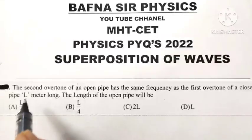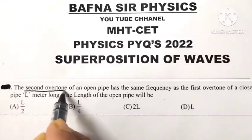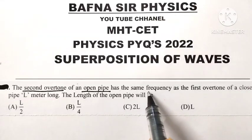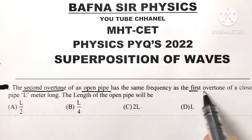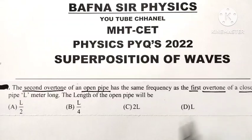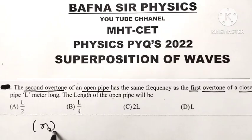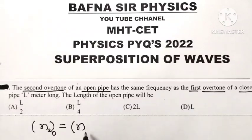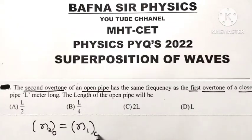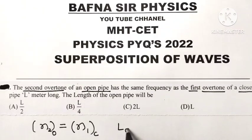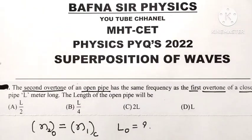The second overtone of an open pipe has the same frequency as the first overtone of a closed pipe. Then the length of the open pipe is?